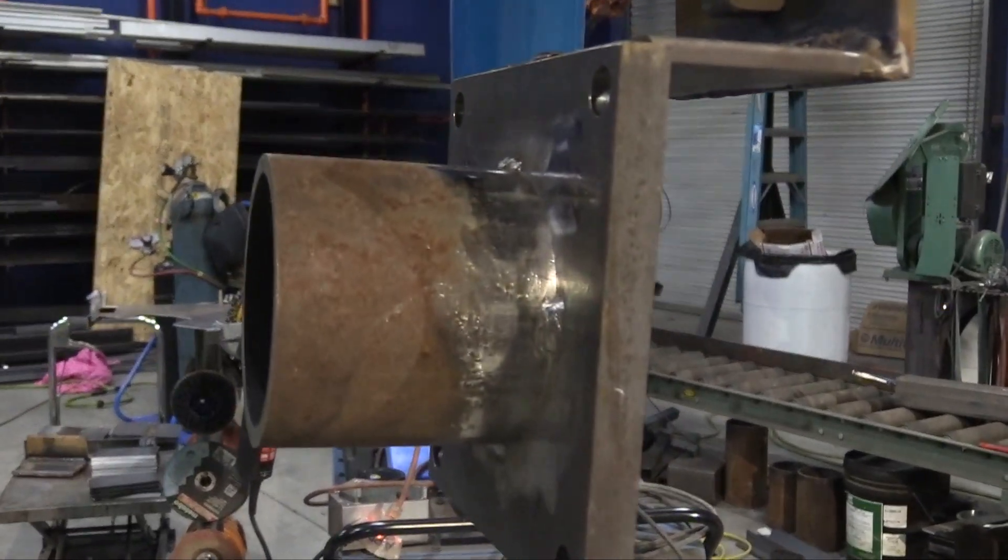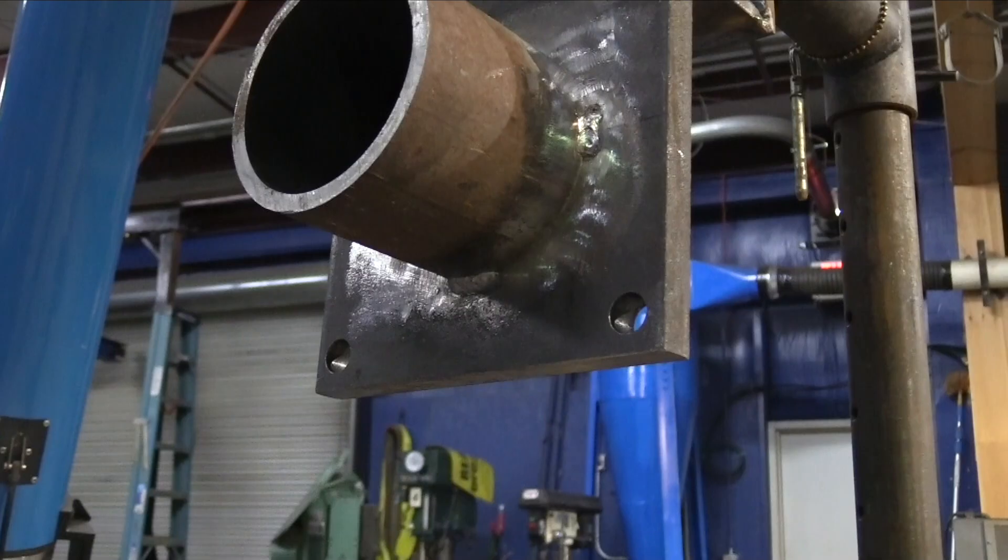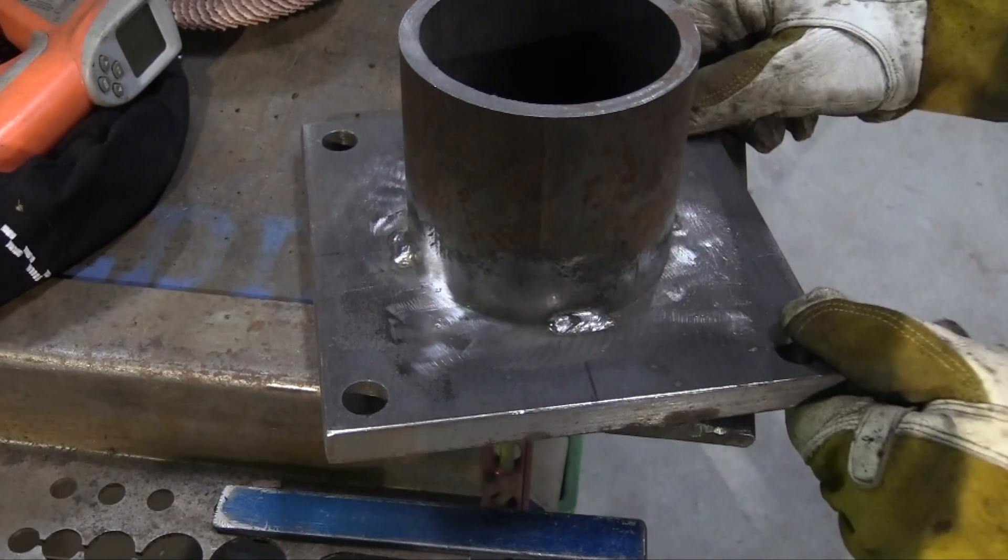Today we're going to be doing a 5F joint, that is a tube to plate where the axis of the tube is in the horizontal position and the plate is in the vertical position.